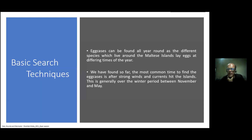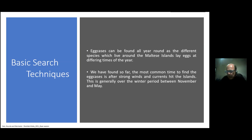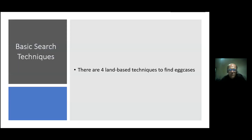There are a few techniques we can use to find egg cases. First, they can be found all year round — different species deposit eggs at different times of the year. Springtime is a peak in most places, but we've found the most common time is after strong winds and currents, generally between November and May. As the climate changes, we can find them through all times of the year in increasing numbers and in different places. There are essentially four different techniques for identifying egg cases.